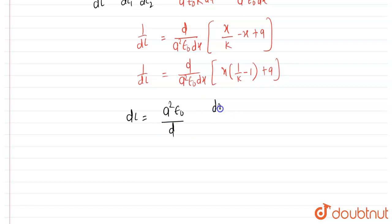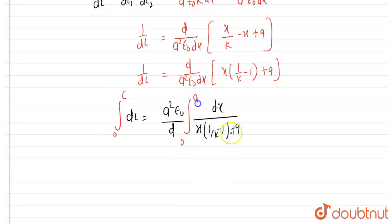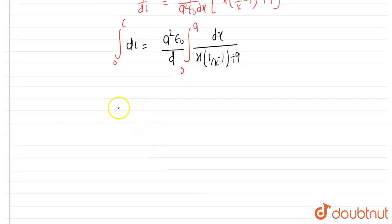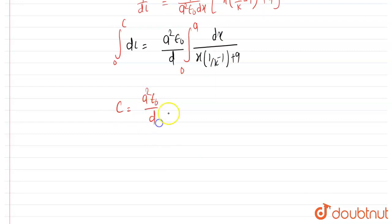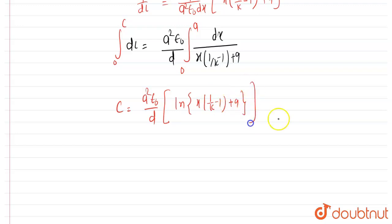Integrating from x = 0 to x = A: C = (A²·ε₀/D) · ∫₀ᴬ dx / [x·(1/K − 1) + A]. The integral of the form 1/(ax + b) gives (1/a)·ln|ax + b|, so the result involves ln evaluated at the limits.